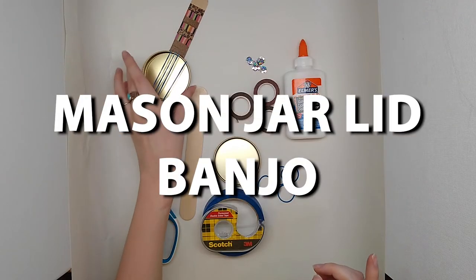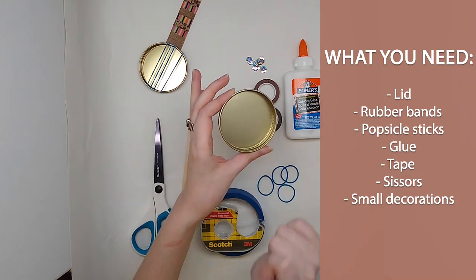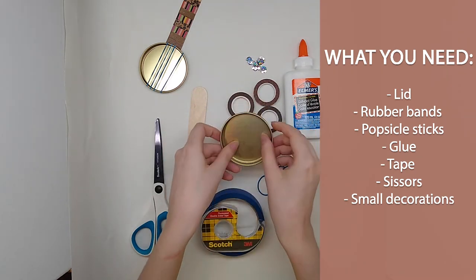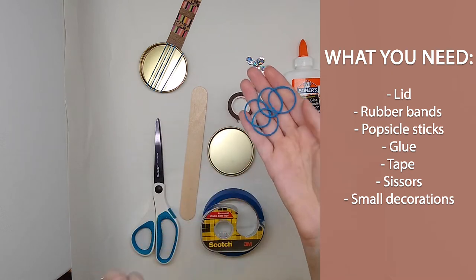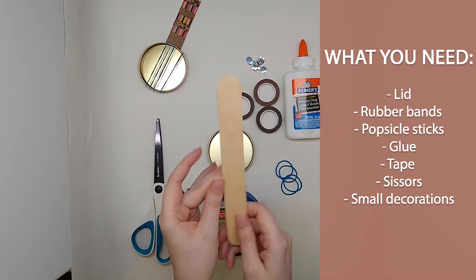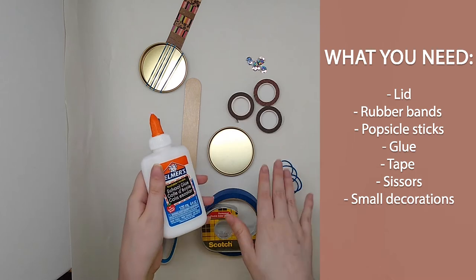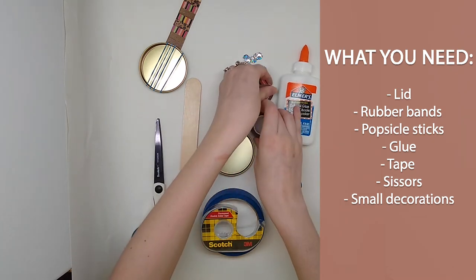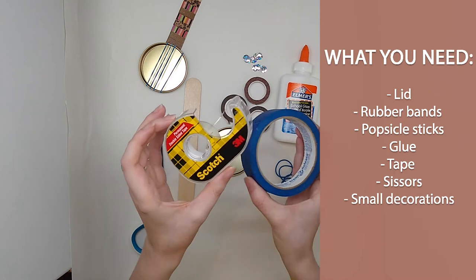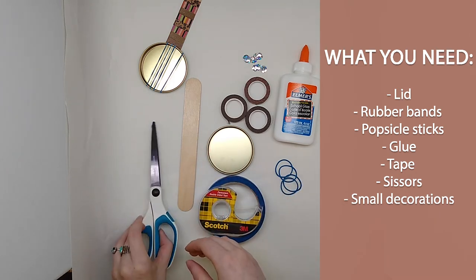To get started with our mason jar lid banjo, you're going to need any lid - this came from a candle mason jar, but you can use any lid you have. You'll need some rubber bands that are pretty small, a popsicle stick, decorations like glue and rhinestones, some washi tape or whatever you have, some sort of tape - I have blue tape and double-sided tape, I would also recommend duct tape - and you'll need some scissors.